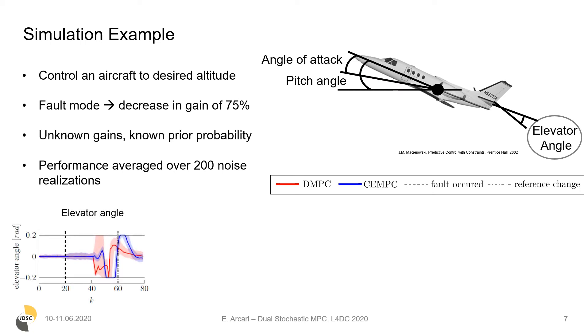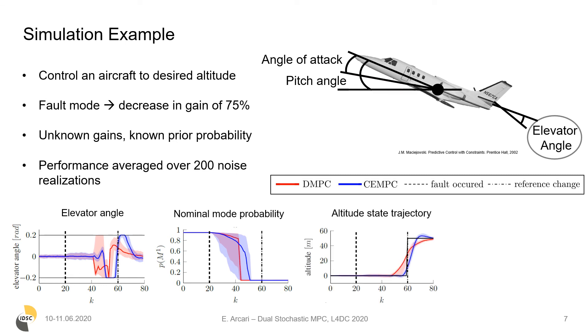The dual MPC elevator input explores aggressively as soon as the reference change enters the prediction horizon at k equal to 40, which enables fast identification of a fault, as we can see here, and ensures adequate performance by starting the pitching maneuver early.